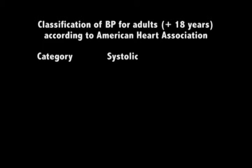We often talk of high blood pressure and low blood pressure. Let us see the classification of blood pressure — what degree of systolic and diastolic pressure can be categorized as high or low. Following the classification according to the American Heart Association, for adults — that means 18 years and above — it can be categorized as hypotension if the systolic pressure is less than 90 and diastolic pressure is less than 60.